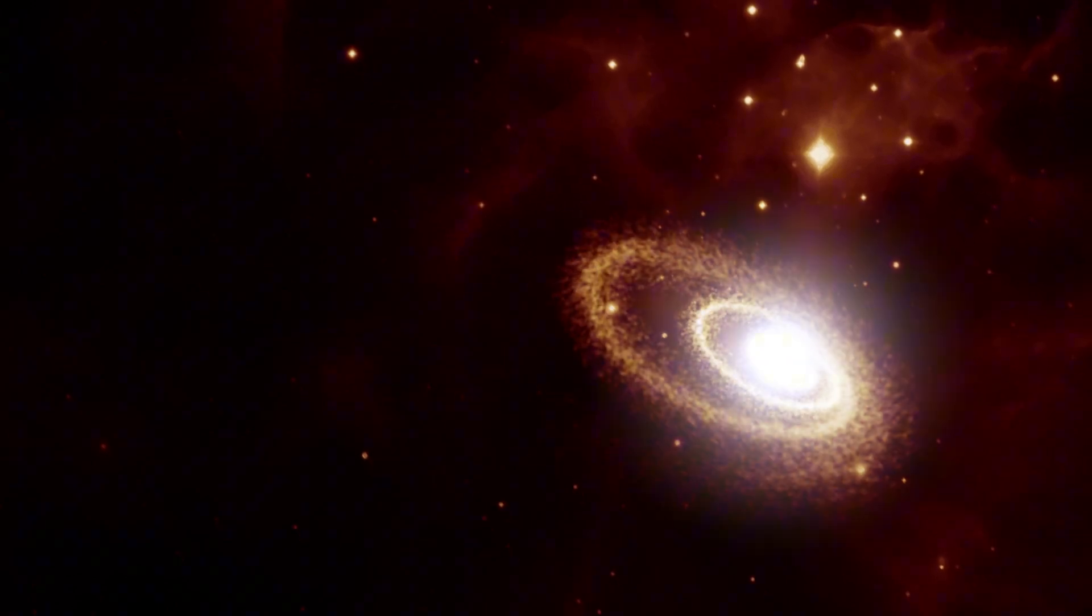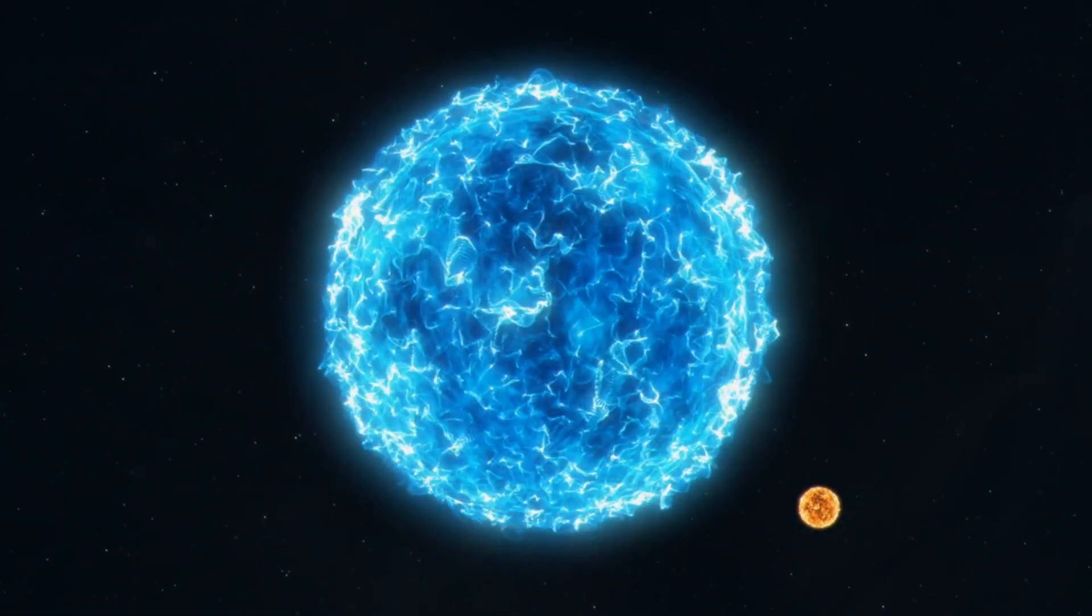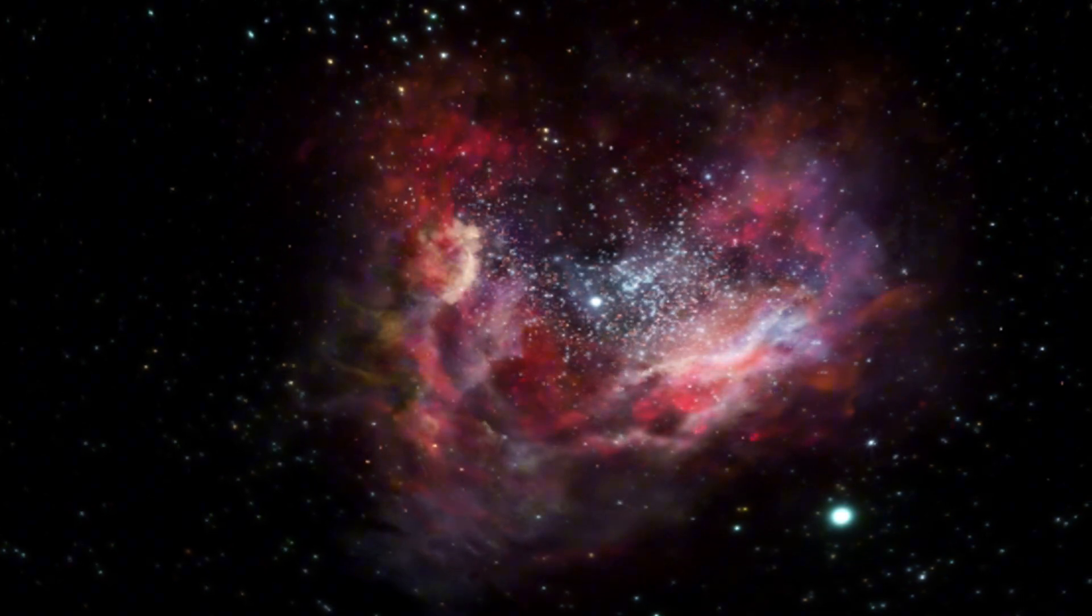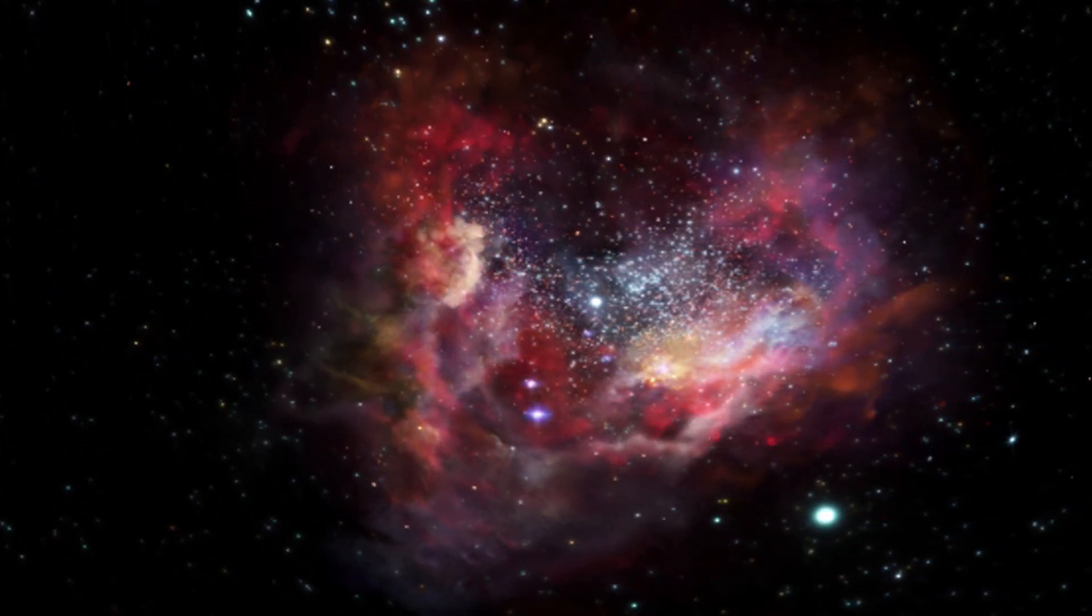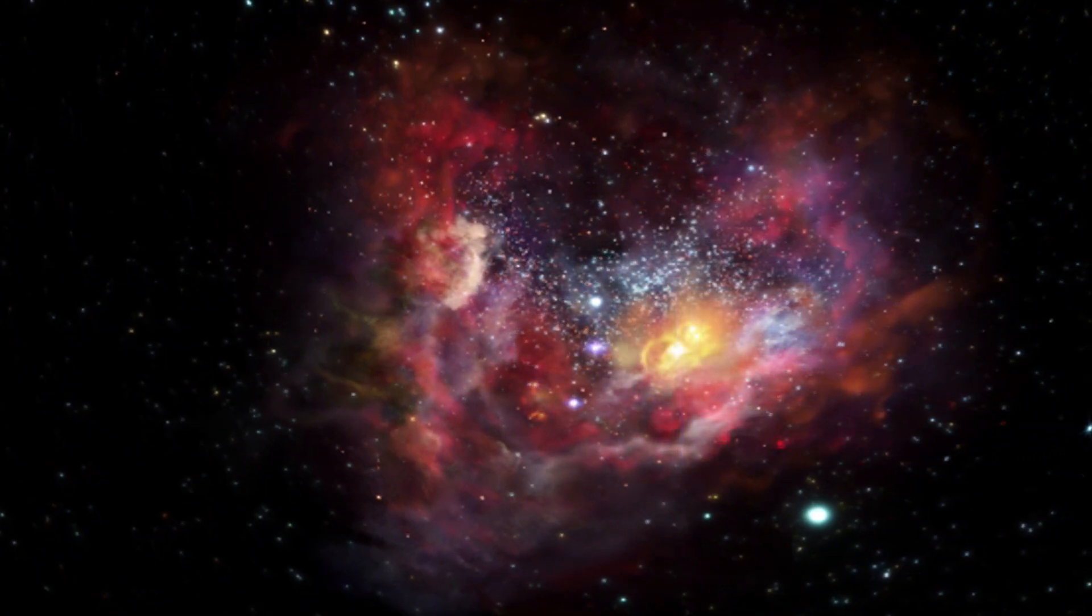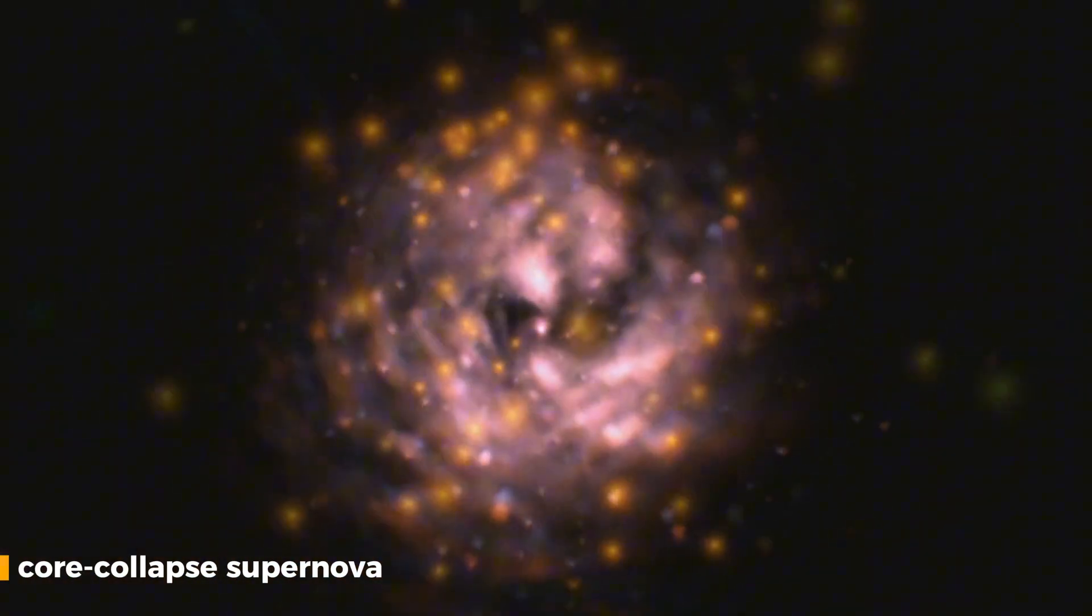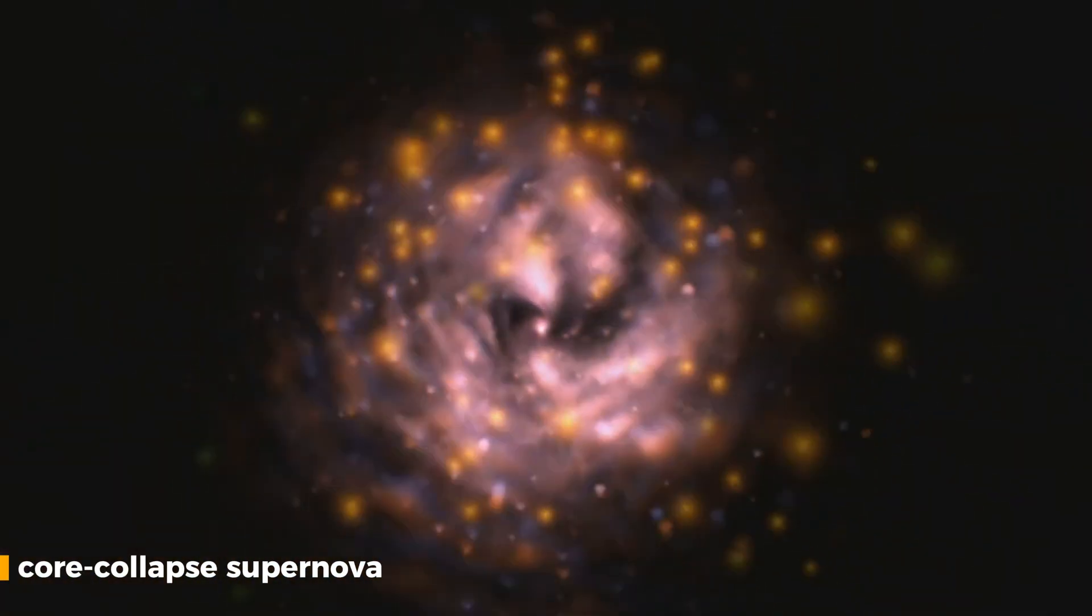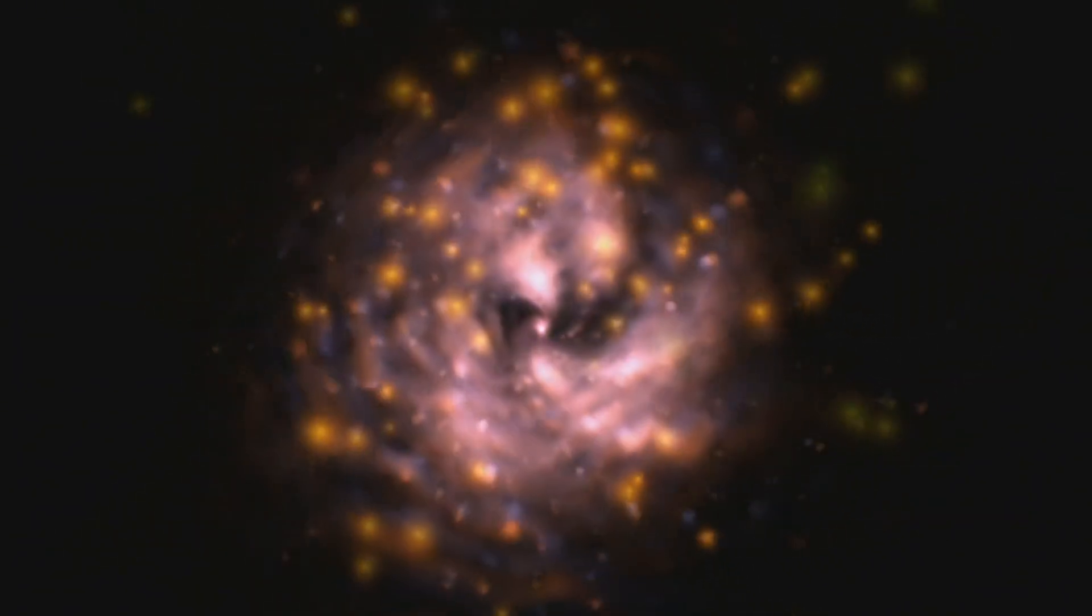A supernova can occur at the end stage of a dying star which weighed at least eight times that of our sun. Once the fusion process inside a star stops, it is unable to hold against gravity, and its core suddenly collapses, leading to a magnificent supernova explosion. This type of supernova is called a core-collapse supernova. Many close or well-known stars fall into the category of stars that can undergo a core-collapse supernova.